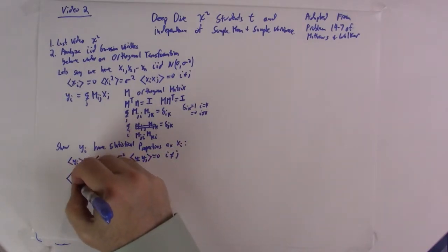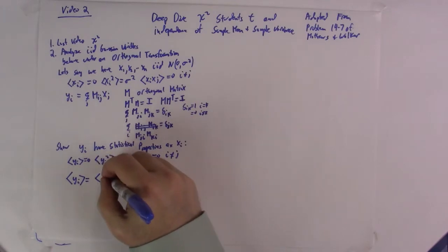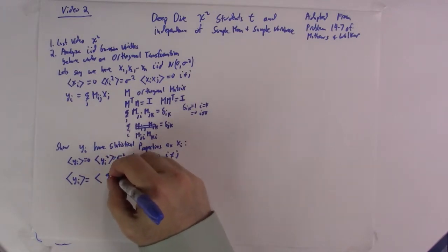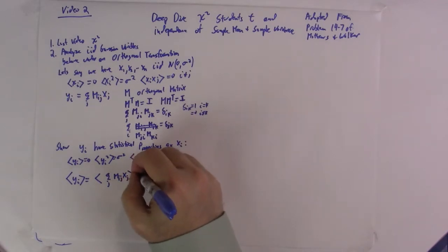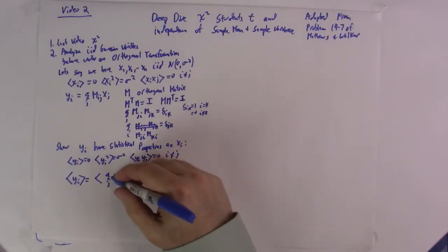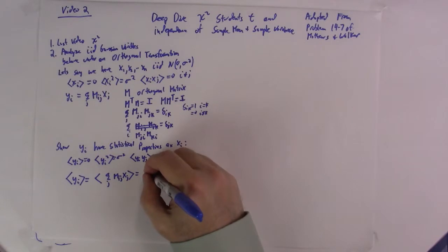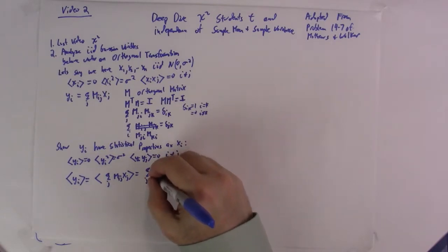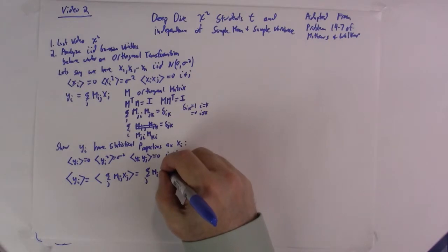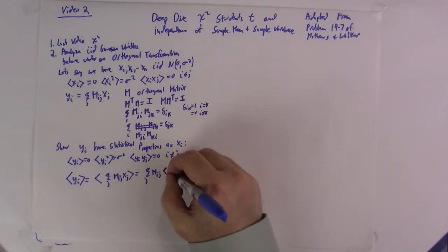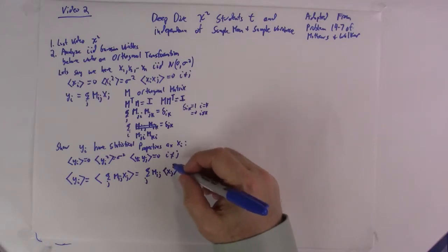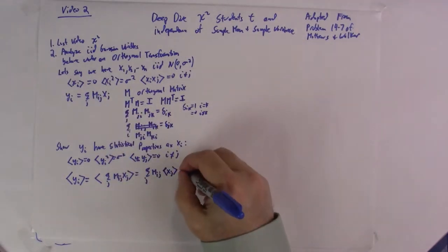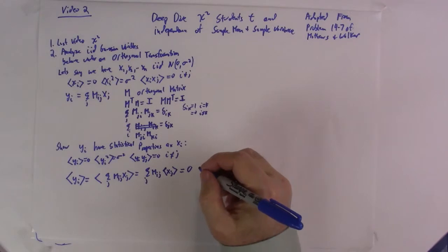The expectation of yi equals the expectation of the sum over j of M_ij times xj. Since the M_ij are constants, we can take the sum outside, and we get the sum over j of M_ij times the expectation of xj. But the expectation of all the x's is zero — that was our assumption — so this equals zero.